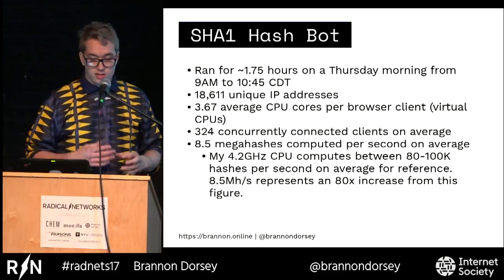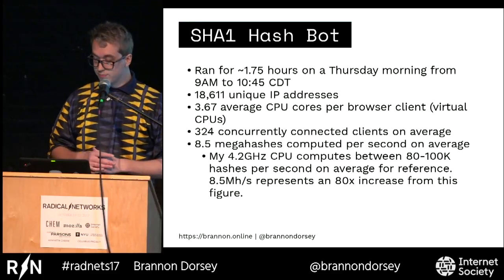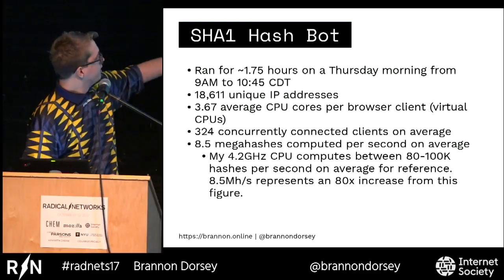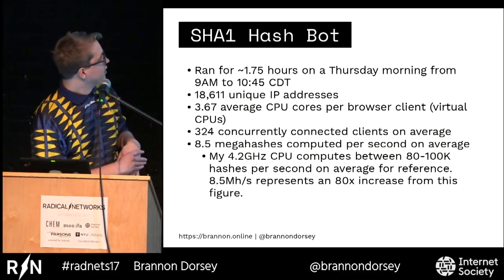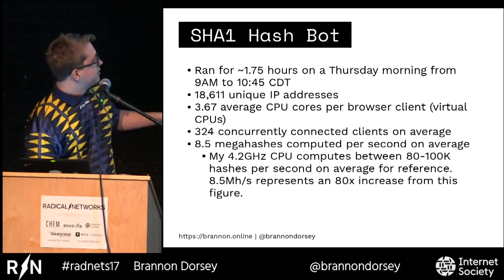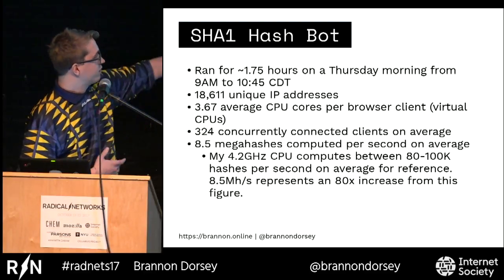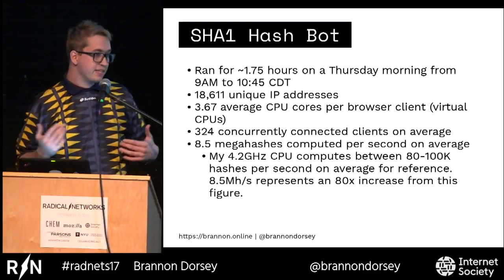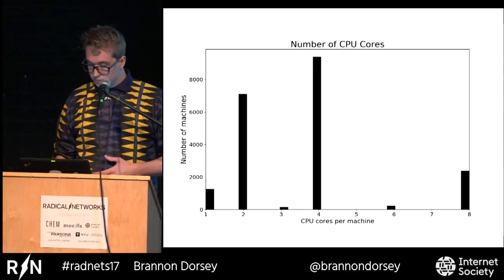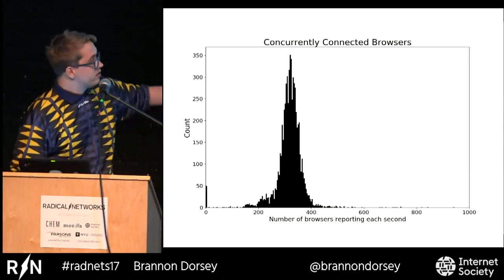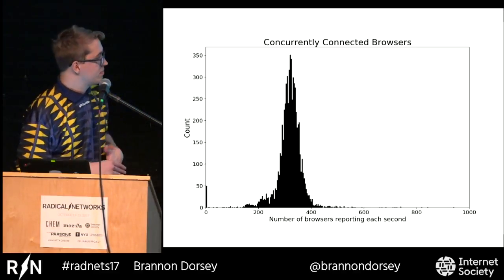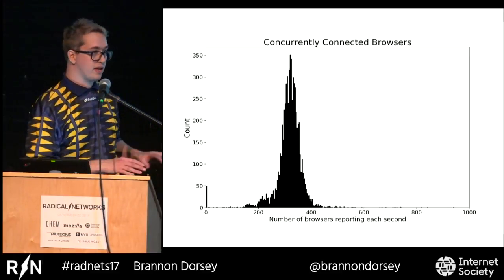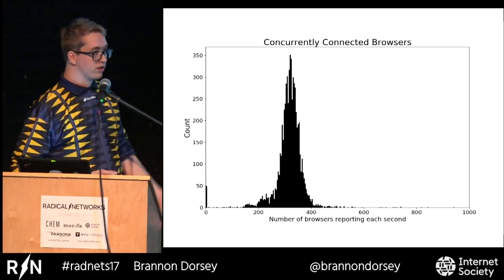The next ad was a hashing bot that measured compute resources. I found that most machines had about three and a half cores on average, which was good news because it meant I could parallelize better. The entire network was able to compute at about 80 times the speed of my personal four-gigahertz computer. A histogram of concurrent viewers showed the average was around 320 concurrent browsers at any time — meaning you could basically be running code on over 300 computers simultaneously.